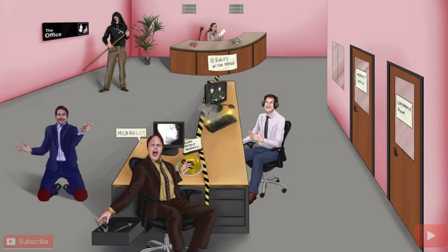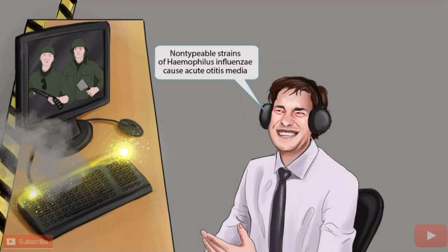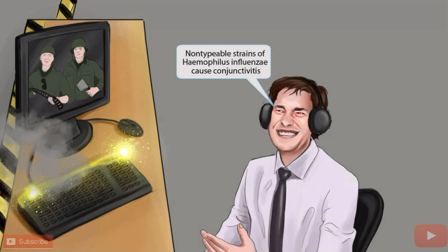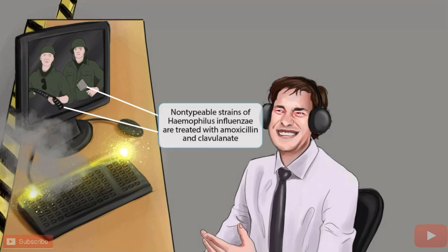Zooming in on James: he's wearing headphones, which — like in other videos — represents acute otitis media. More specifically, non-typable strains cause acute otitis media. In an otoscopic image of otitis media, the tympanic membrane bulges toward the viewer and appears red — a classic finding. James's very red eyes (from playing Call of Duty for 12 hours straight) help you remember that non-typable strains cause conjunctivitis. On his screen, one character holds an ammo belt (amoxicillin) and another holds a cleaver (clavulanate), indicating non-typable H flu can be treated with amoxicillin and clavulanate.